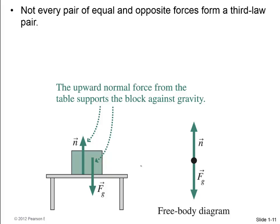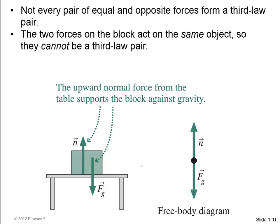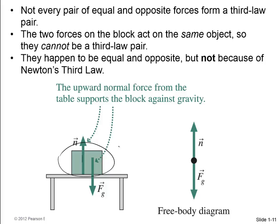Now, not every pair of equal and opposite forces form a third law pair. For example, you've got this block sitting on a table. There's two forces acting on it. There's the weight, F_g, acting downwards. And then there's the normal force acting upwards. And these cancel because they're equal in magnitude and opposite in direction. But they're acting on the same object. So, those cannot be a third law pair. They happen to be equal and opposite in this case, but it's not because of Newton's third law.